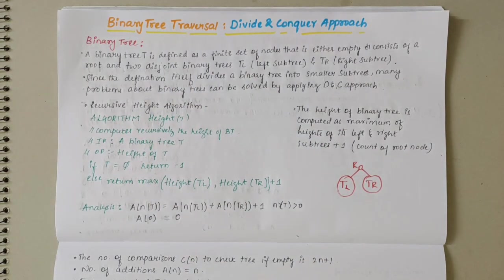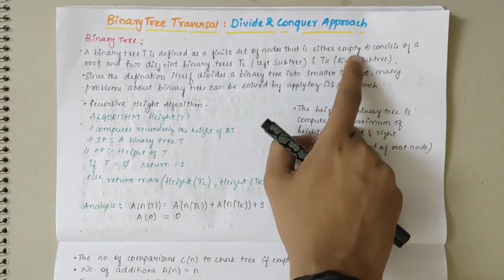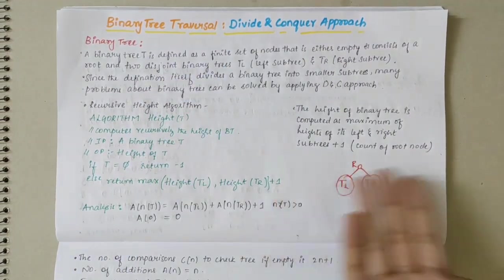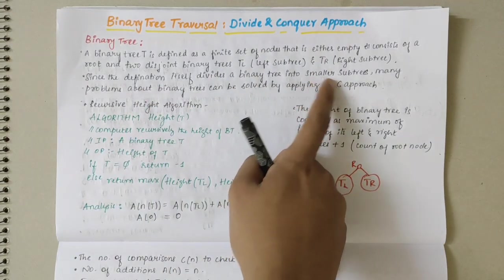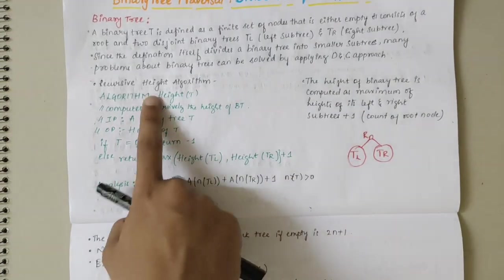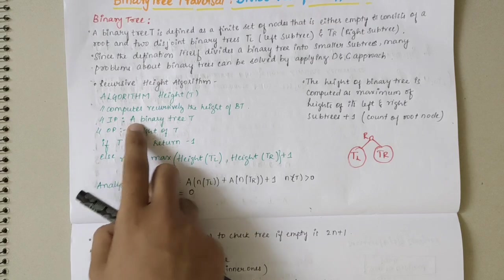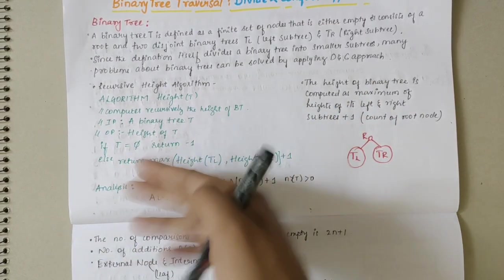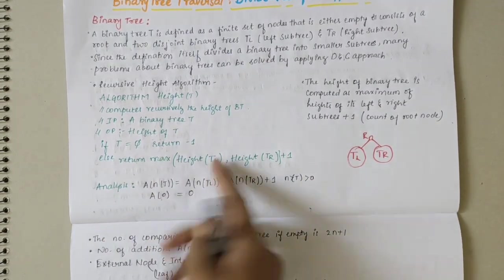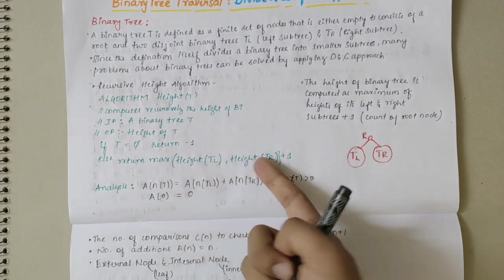Next we have binary tree traversal using the divide and conquer approach. A binary tree T is defined as a finite set of nodes that is either empty or consists of a root and two disjoint binary trees: a left subtree and a right subtree. Since the definition itself divides a binary tree into smaller subtrees, many problems about binary trees can be solved by applying the divide and conquer approach. Here is an algorithm that recursively computes the height of a binary tree: if T is null, return −1; else return max(height(left subtree), height(right subtree)) + 1. The +1 counts the root node.